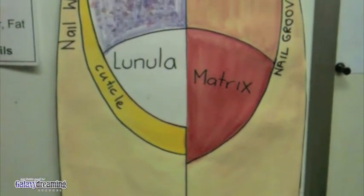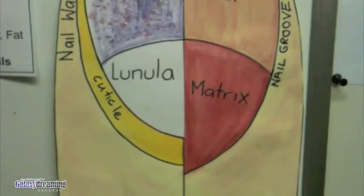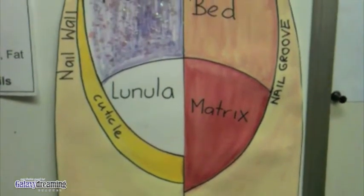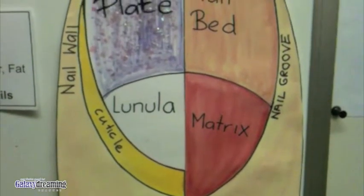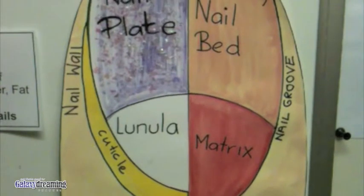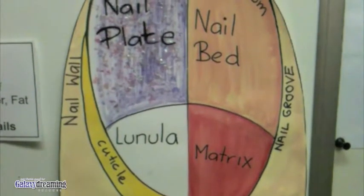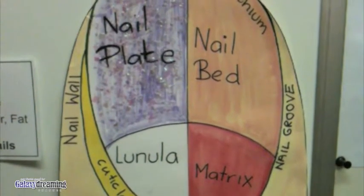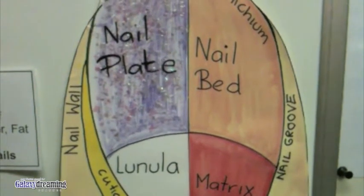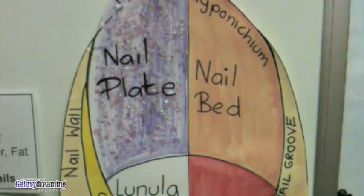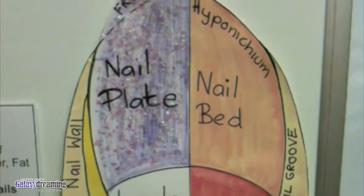Growth takes place under the cuticle at the nail base. The area called the matrix adds keratinised cells to the nail root and the whole nail is continuously pushed forward along and towards the free edge.